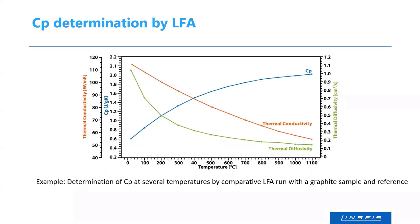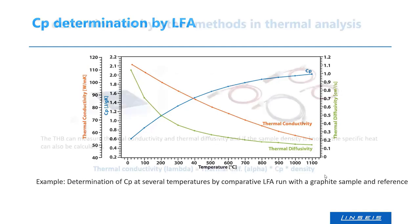If you find a fitting reference — for example, a graphite sample measured with a graphite reference — you can determine CP at several temperature steps, obtain the CP curve, and then calculate the thermal conductivity curve from the LFA data.